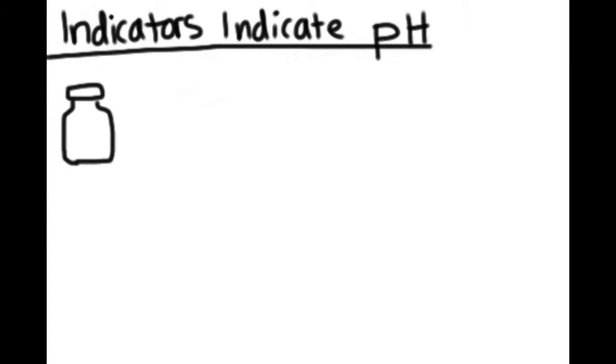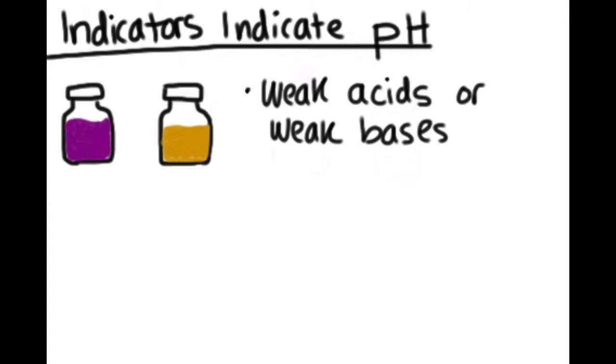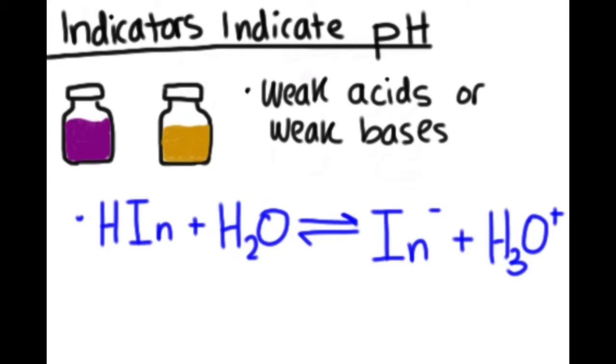In this experiment, we see that indicators show through color change that a shift in pH has occurred. But why do indicators change color? First, indicators are usually either weak acids or weak bases. When they react in an acidic solution, the equation reads as such, with HIN representing the indicator and IN- being the anion.